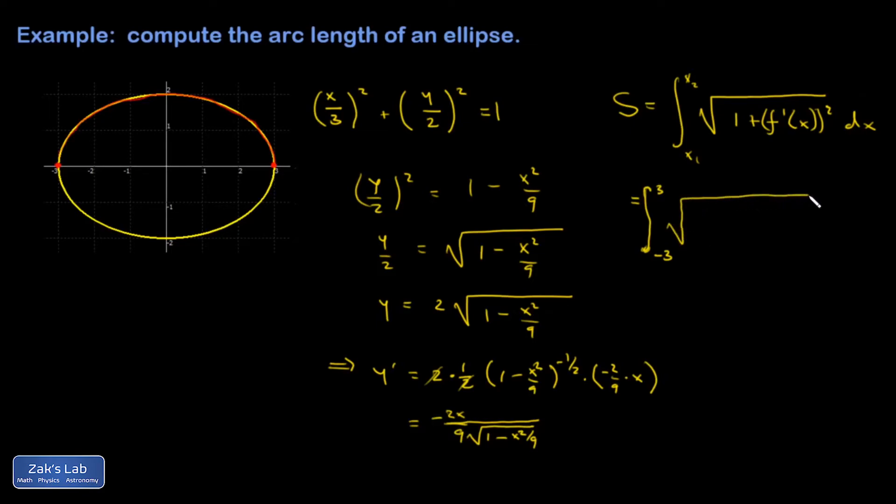Clean up my integral sign a little bit. And I'm inside this square root, which in practice makes these integrals almost always impossible to do symbolically. And I end up with a 1 plus, and my fraction here is 4x squared over 81 times 1 minus x squared over 9.